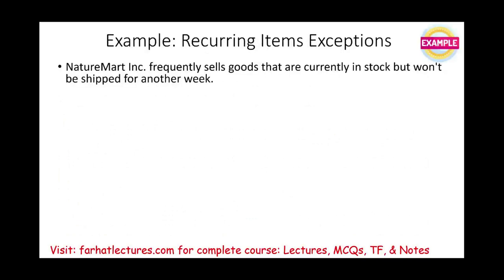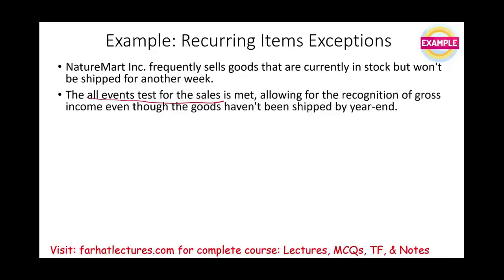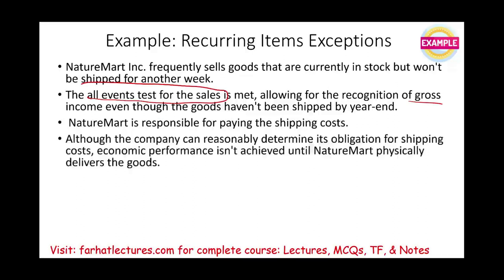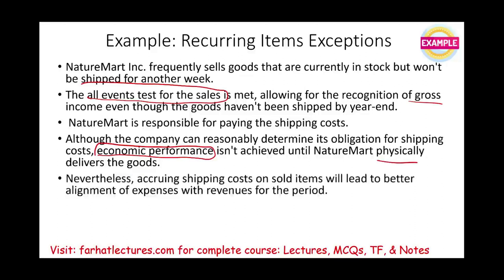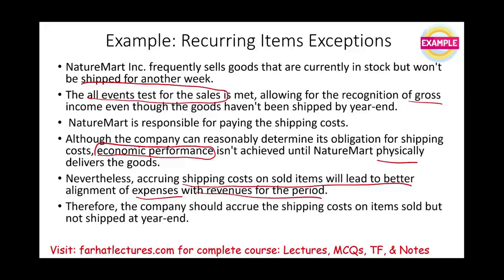Example: Nature Mart frequently sells goods currently in stock but not yet shipped. The all events test for sales is met, allowing recognition of gross income even though goods have not been shipped as of year end. Nature Mart is responsible for shipping costs. Although economic performance is not technically met — the goods weren't physically delivered — accruing shipping costs on sold items leads to better alignment of expense with revenue. Under the recurring item exception, the company can accrue the shipping costs on items sold but not yet shipped.